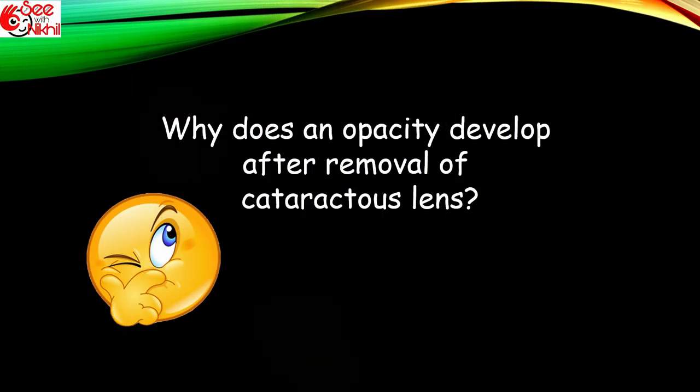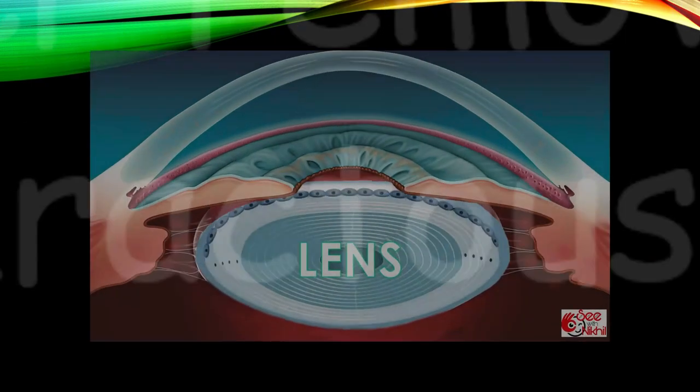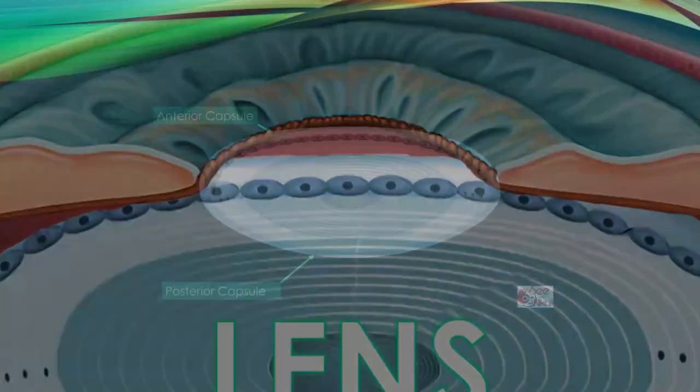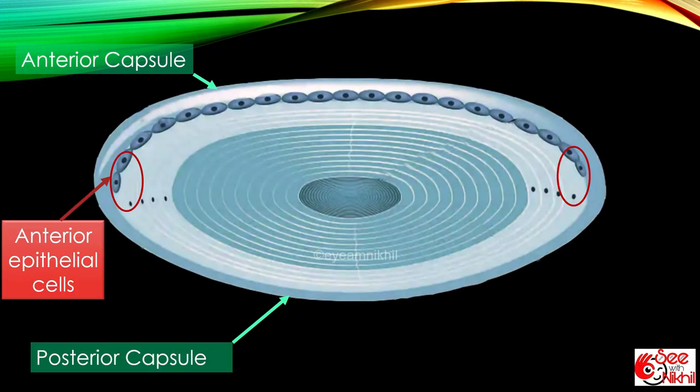But why does the opacity develop after cataract surgery when we have already removed the cataractous lens? Looking at the structure of an adult lens, it is the anterior epithelial cells, especially in the equatorial region, that are actively dividing and progressively lay down new lens fibers to form nucleus and cortex.